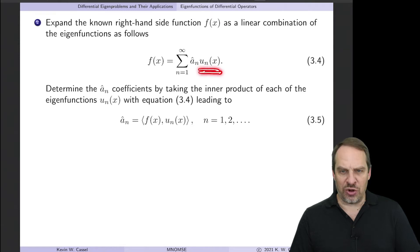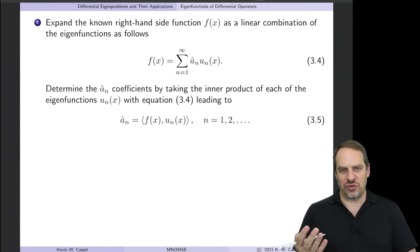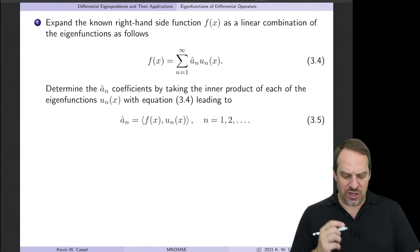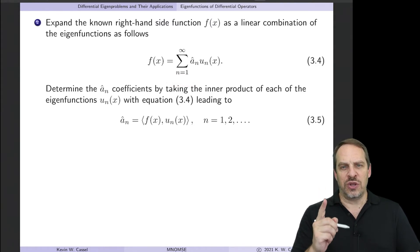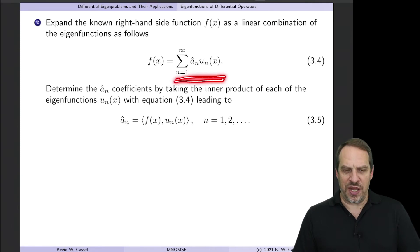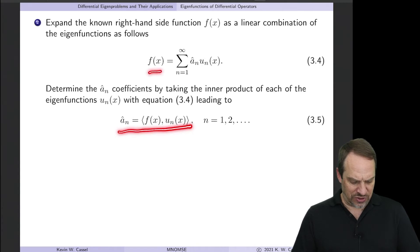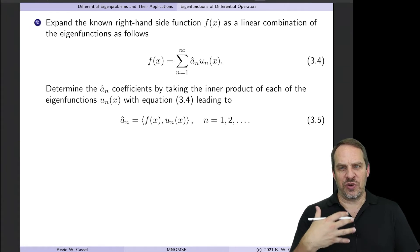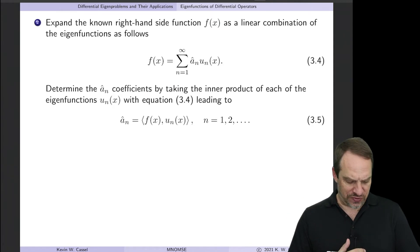Remembering that U sub n are all mutually orthogonal because of the self-adjoint nature of our differential operator, as we'll see later on, all of those inner products, every single inner product in this infinite sum is zero, except for the one term where you have the inner product of a function with itself, U n with itself. All the other terms are zero. That just produces A sub n hat on the right-hand side. So A sub n hat is then equal to the inner product of F, the function that we have on the right-hand side of our differential equation, with the corresponding eigenfunction U sub n. So that's step two, and that is an expression of our right-hand side function F of x in an infinite expansion in terms of our eigenfunctions of the differential operator.